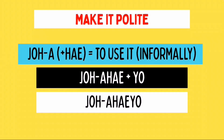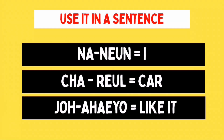The last part of the sentence is chowayo. Take note, we started with our word for today, which is chowa. And then we added he to use it in informal speech, so it will go like chowahe. And then, to make it a little bit polite, we will be adding yo, so that's chowahe yo — chowayo. Again, nanun means I, charul means car, and chowayo means like it. So the sentence means: I like that car.